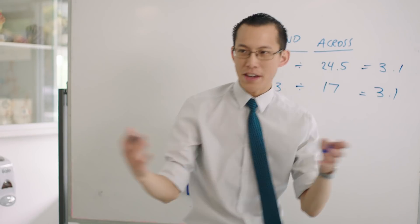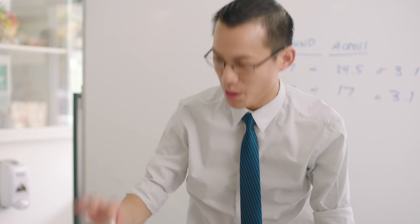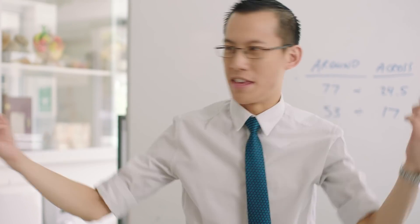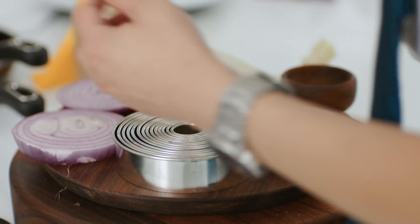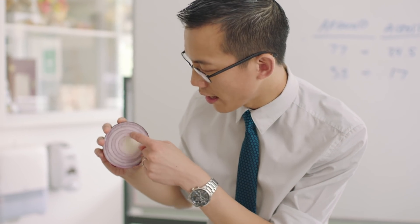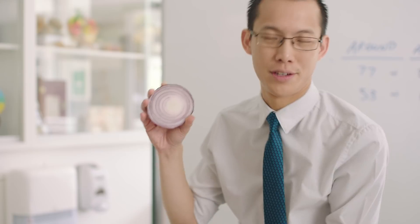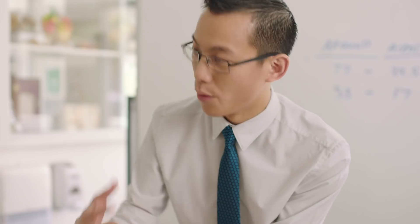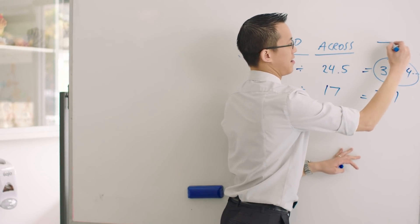3.1 from both measurements! We measured different circles, different sizes, but got the same pattern — this number 3.1. You could take tiny little circles or a circle like the equator around the earth and you'd always get this same number. It shows how everything's interconnected. Look at these concentric circles — all nested within each other, in things we make and in nature too. Look at this onion: you can see the rings are also concentric, and if we measured around and across we'd get the same ratio. This number is so important it has more decimal places — we call it pi, which is a Greek letter.